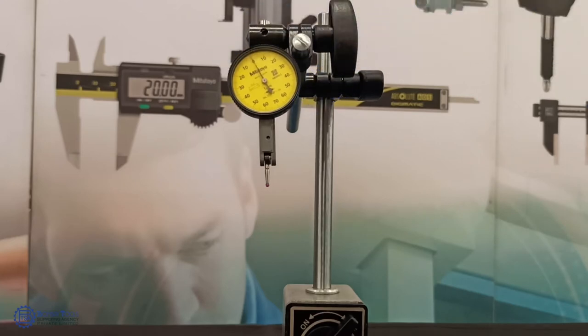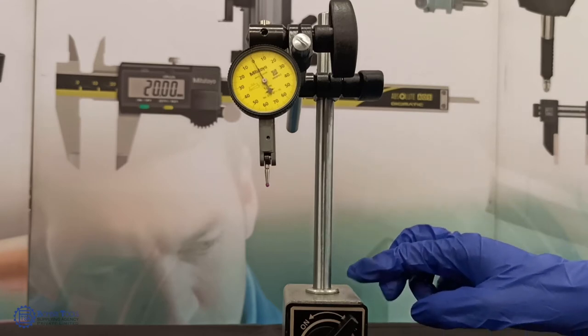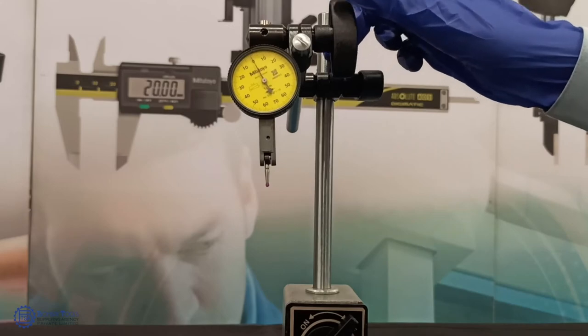We can fix it with the height gauge or magnetic stands. For this demonstration I have used a Jafuji magnetic stand. Tighten the knob and clamp before measurement.